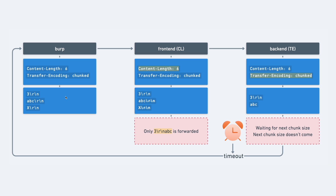If we send this request and the frontend server is using Content-Length, and we've defined a Content-Length of 6, it will only forward 6 bytes of content to the backend server — which is '3' followed by a carriage return line feed (1, 2, 3 bytes), and then 'ABC' (4, 5, 6 bytes in length).